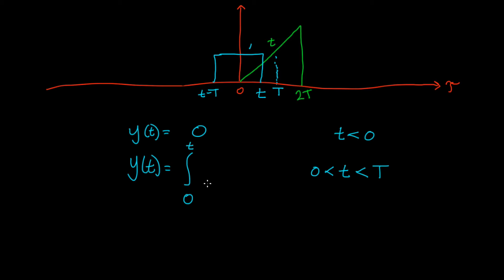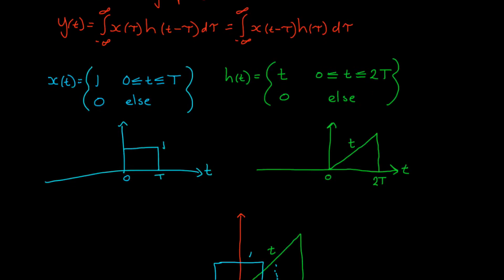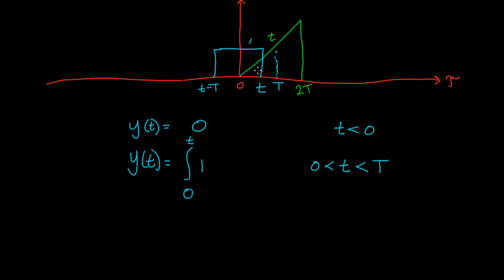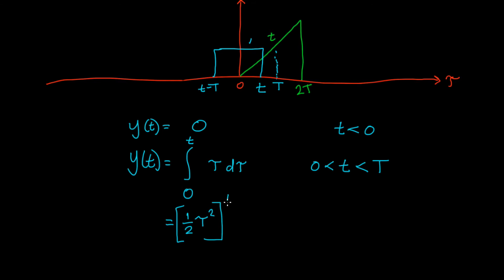x(t − τ) is 1 in this region, so we can add that into the integral. We're just using the formula up here and adding in the values for each case graphically. The other function here, h(τ), is just τ — we call it τ inside the integration. So if we solve this, the integral of τ is ½τ², and that's going to be evaluated between t and 0. When we substitute t in for τ, we get ½t² as our value for y(t) in this case.